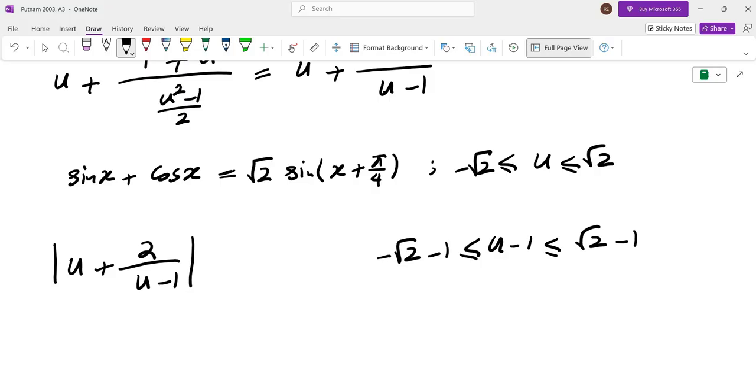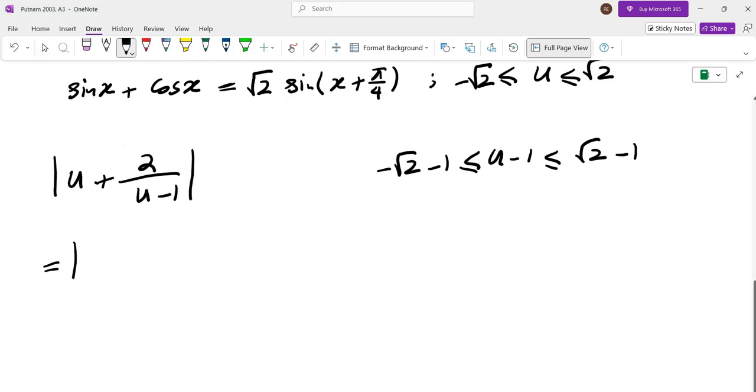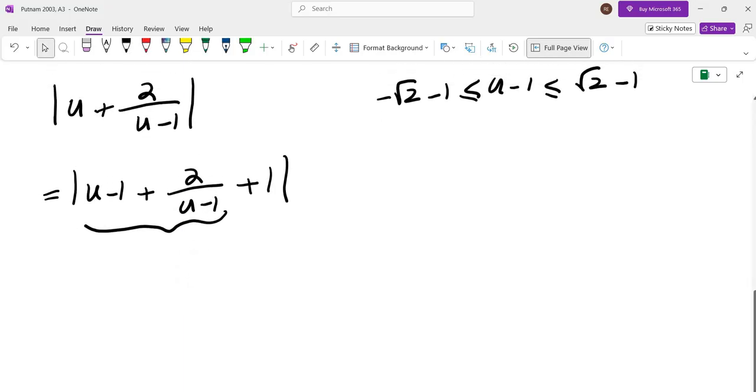So we can rewrite this as u minus one plus two over u minus one plus one. That allows me to use AM-GM here. So there are two possibilities.